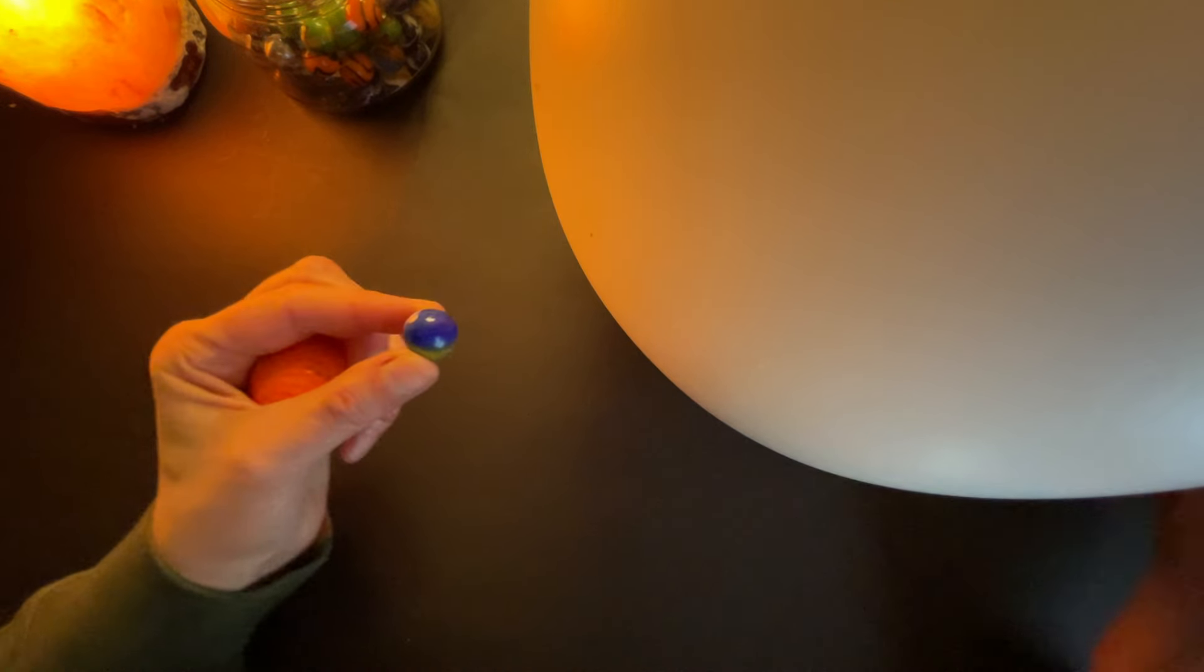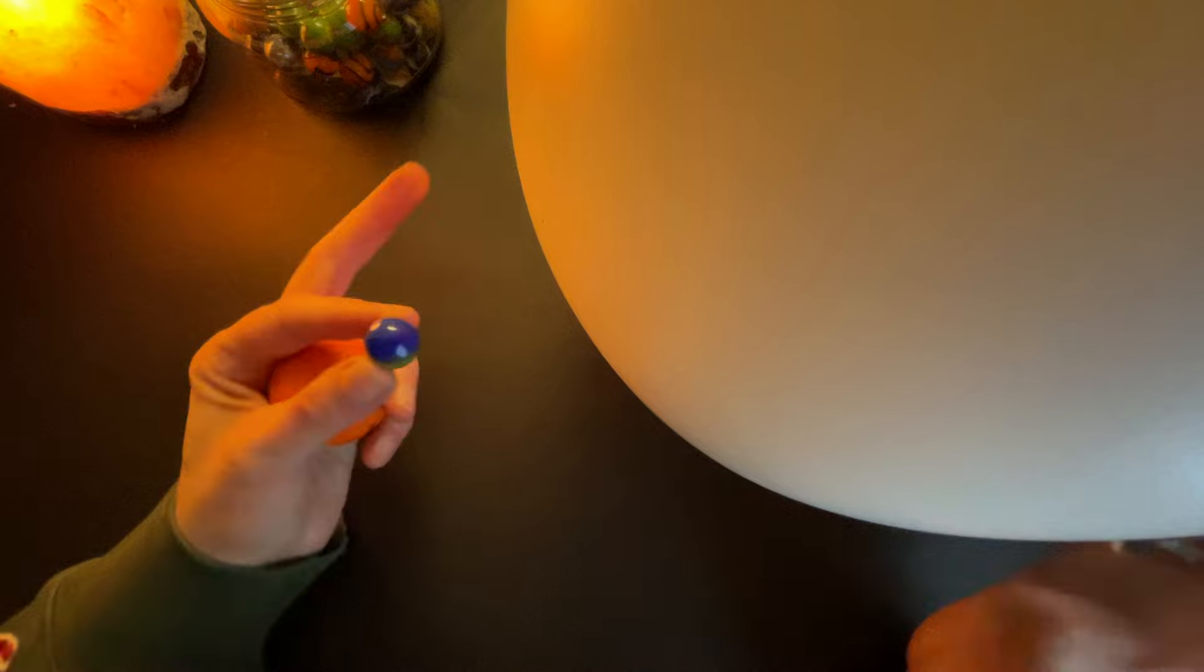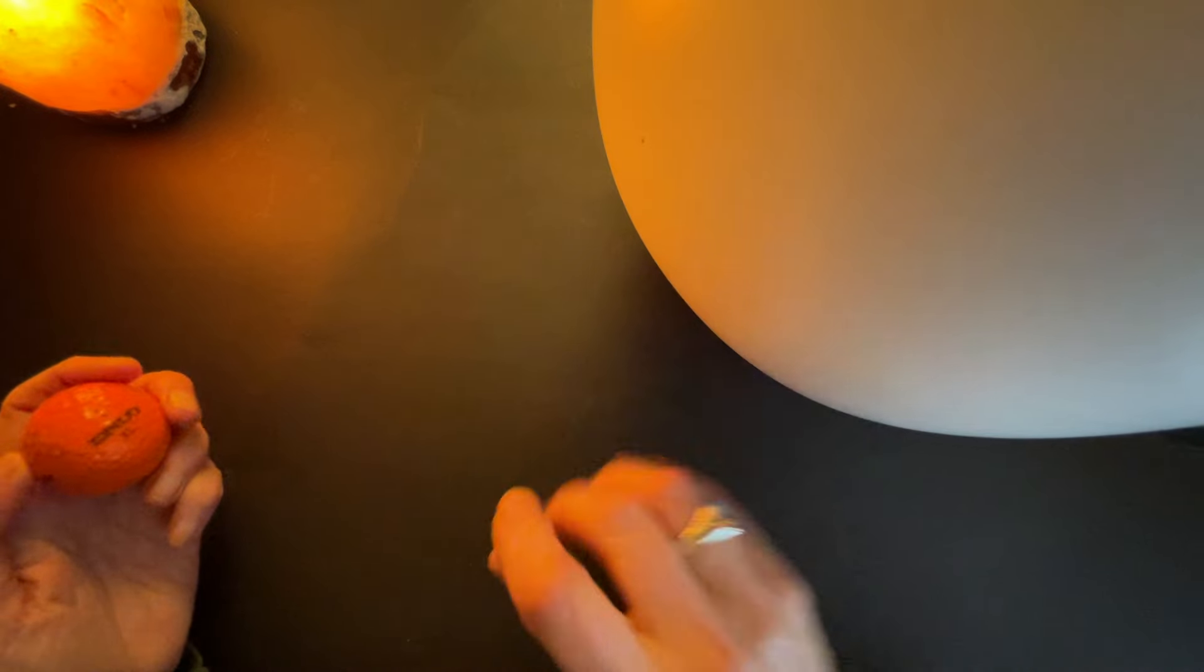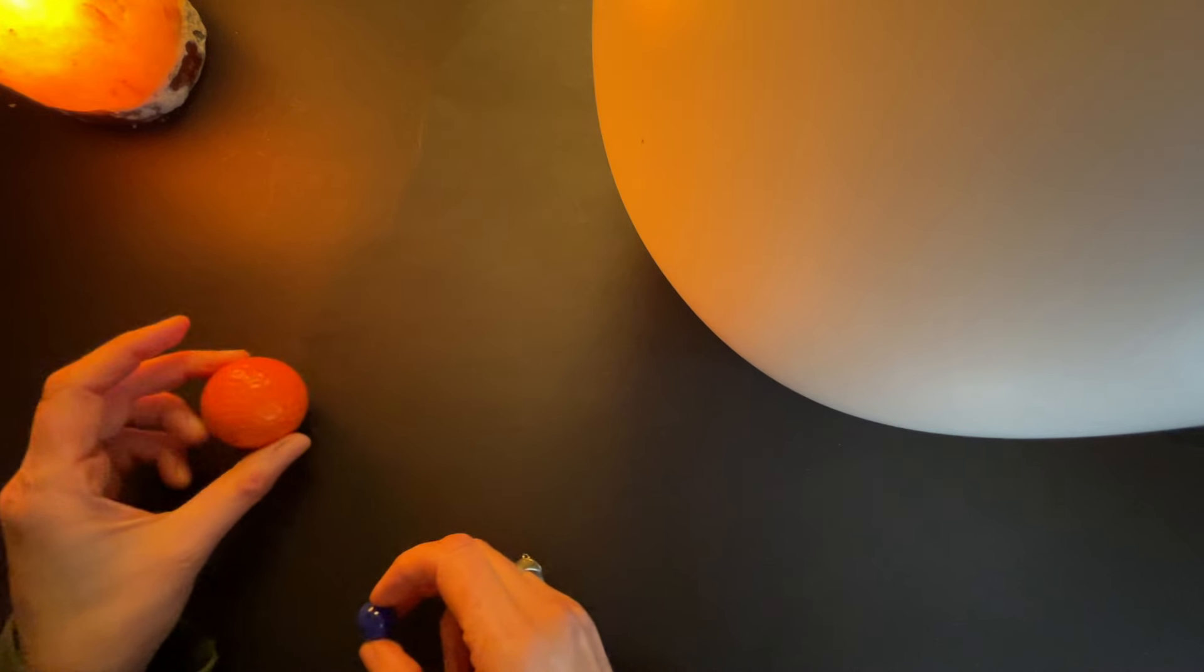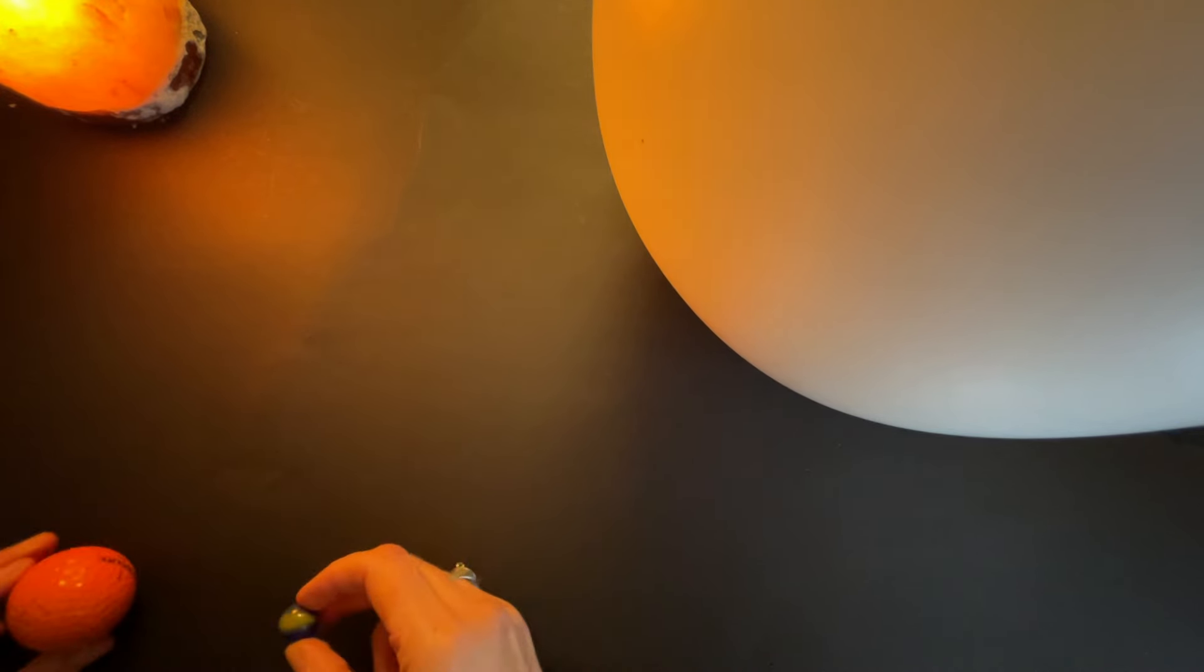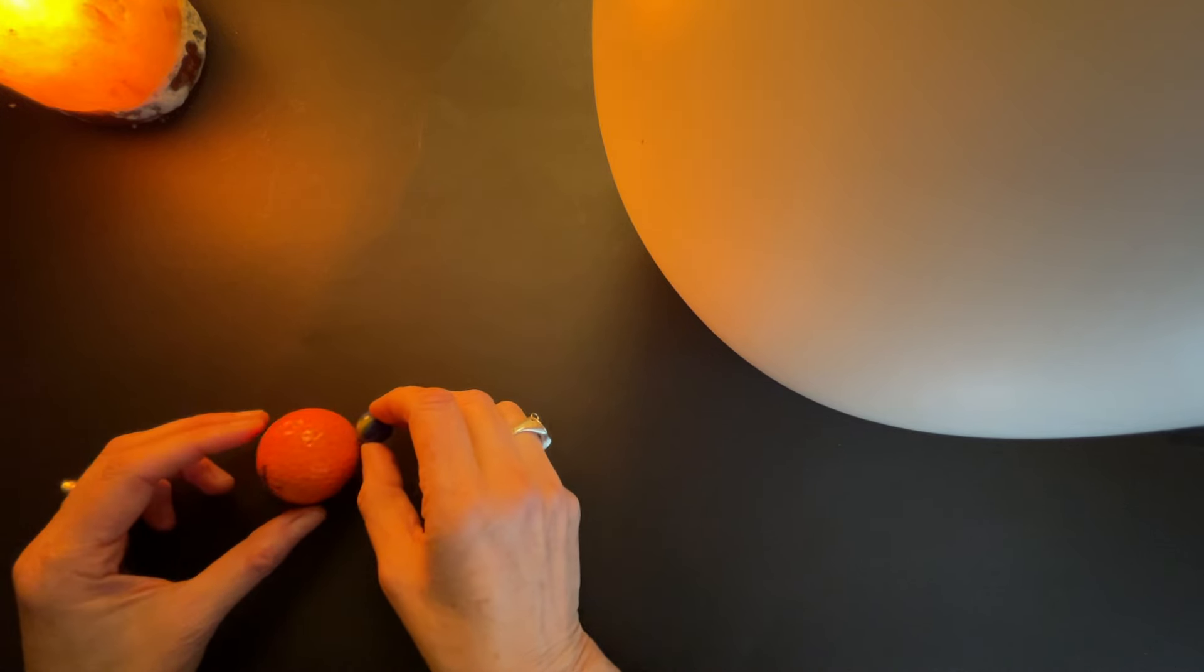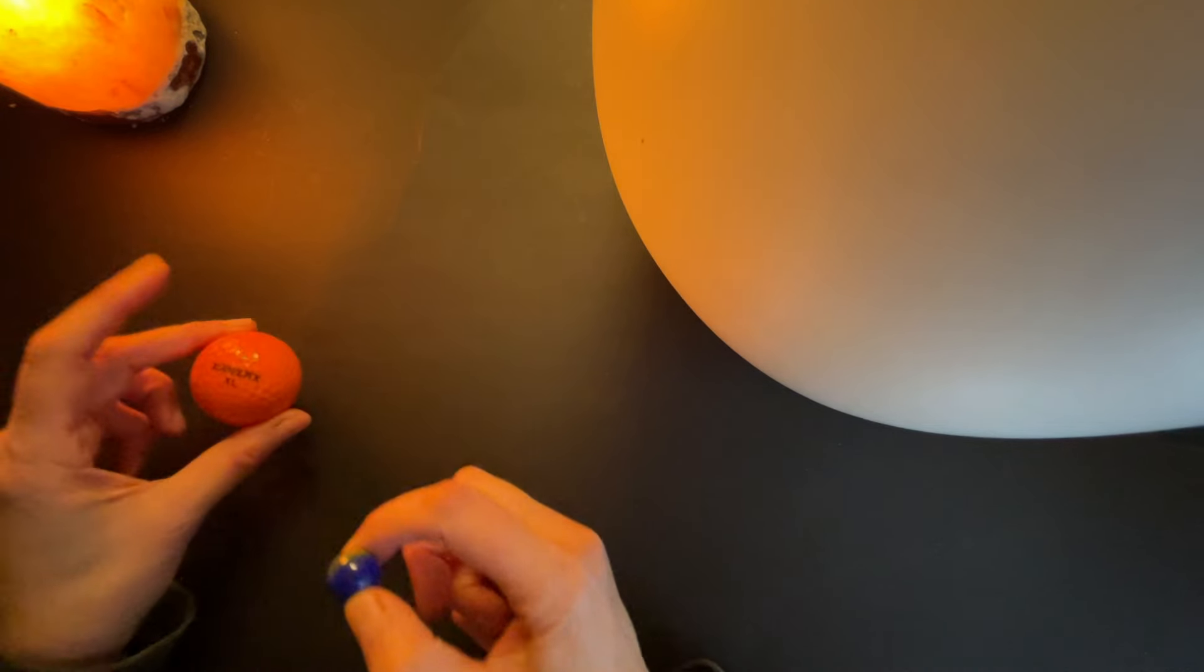So we have our sun and this is Earth and they're way far away from the sun. And then here's moon and the moon is going around our Earth and stays with us and we go around the sun.